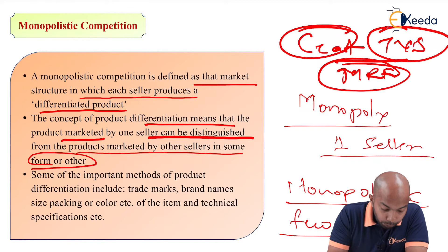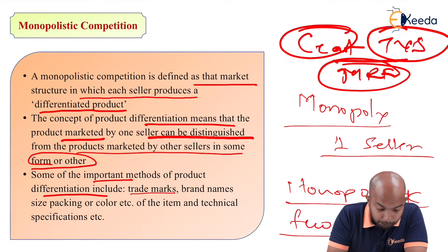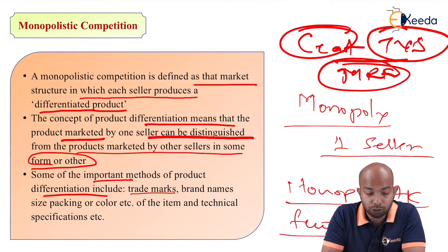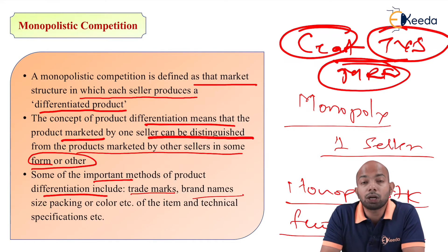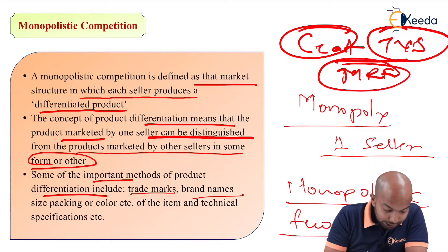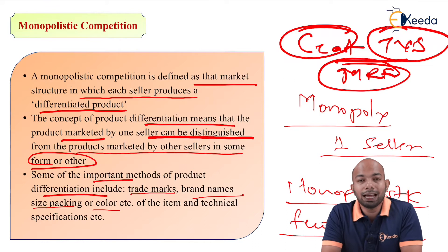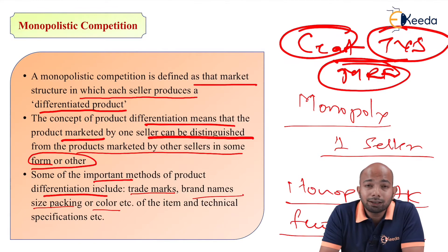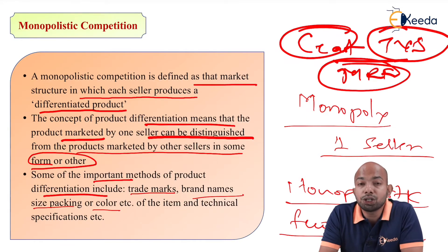Some of the important methods of product differentiation include: trademarks — CEAT, MRF, TVS, and Michelin each have different trademarks; brand names — each company has a different brand name, whether Indian or foreign; and size, packing, or color — some tires may have very black shades, some may have a white rim outside, or completely different designs based on those factors.